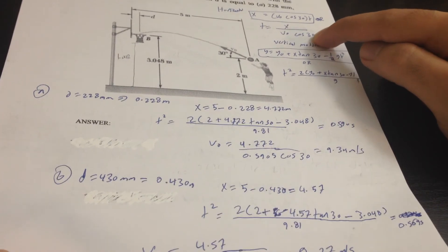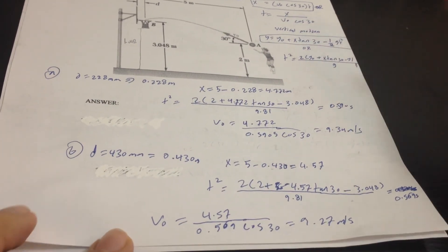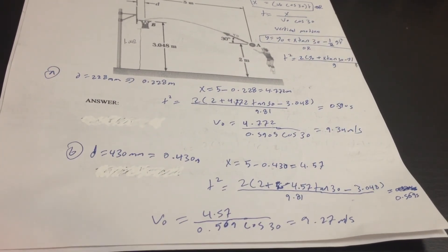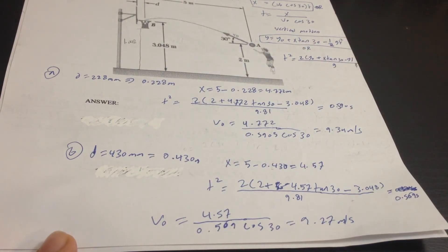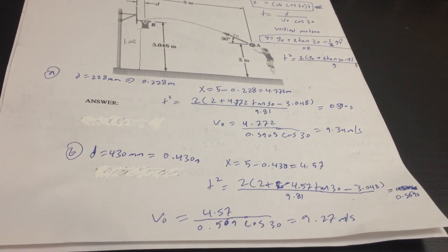And that's all. Of course, the final answer is 9.27 meters per second. We find the distance D and V0. That's all for today. Thanks for watching, please subscribe.